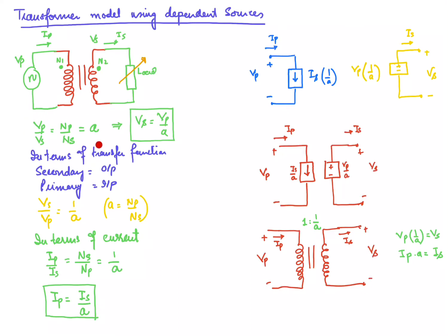The basic equation for the transformer is that the ratio of voltage from primary to secondary is equal to the turn ratio, that is Np over Ns, which we let equal to 'a'. From this we can write Vs = Vp/a. In terms of a transfer function, taking the secondary voltage as the output and the primary voltage as the input, we get Vs/Vp = 1/a.